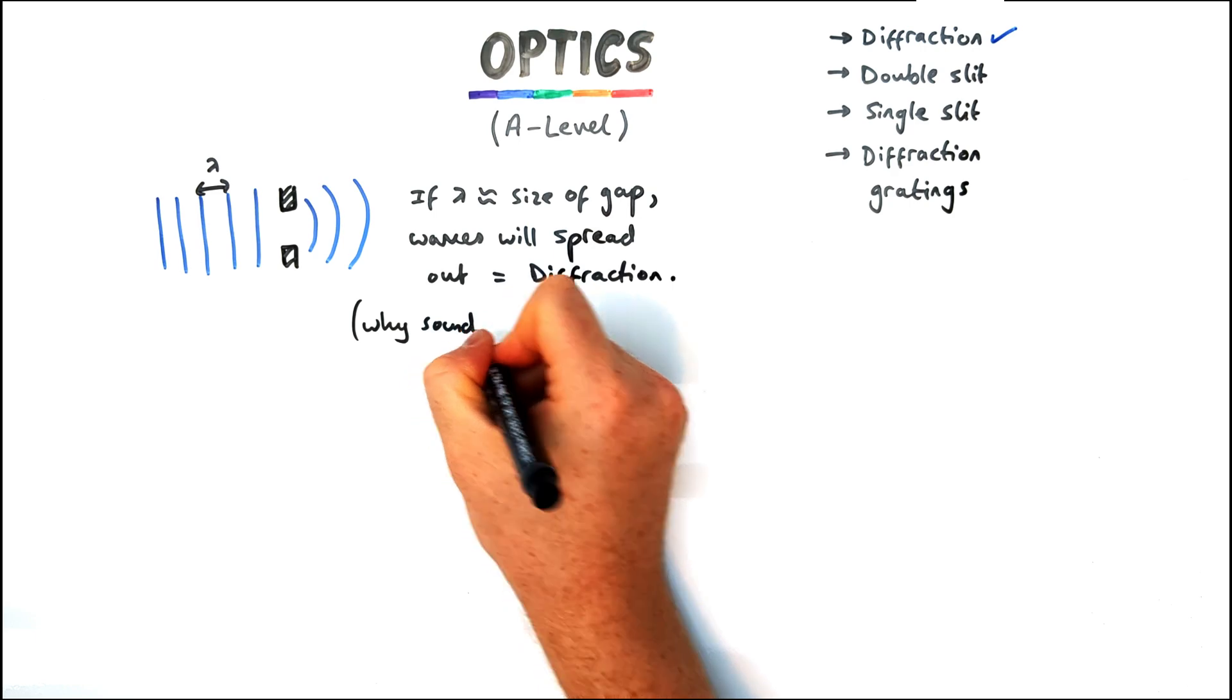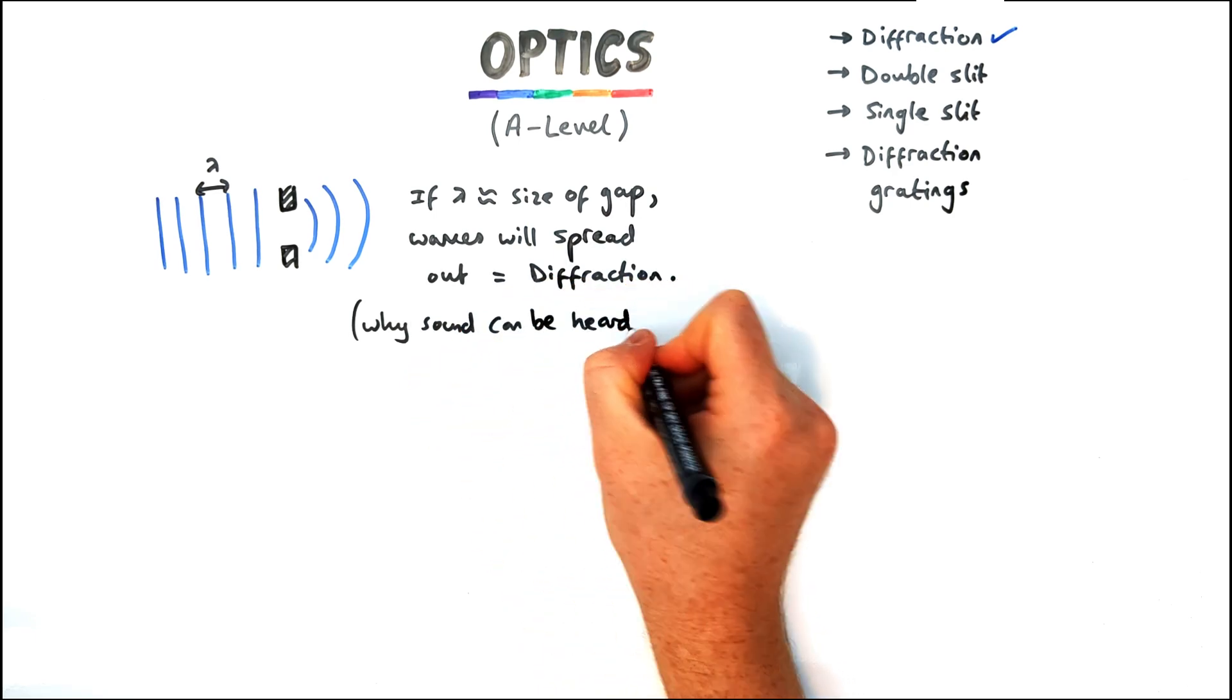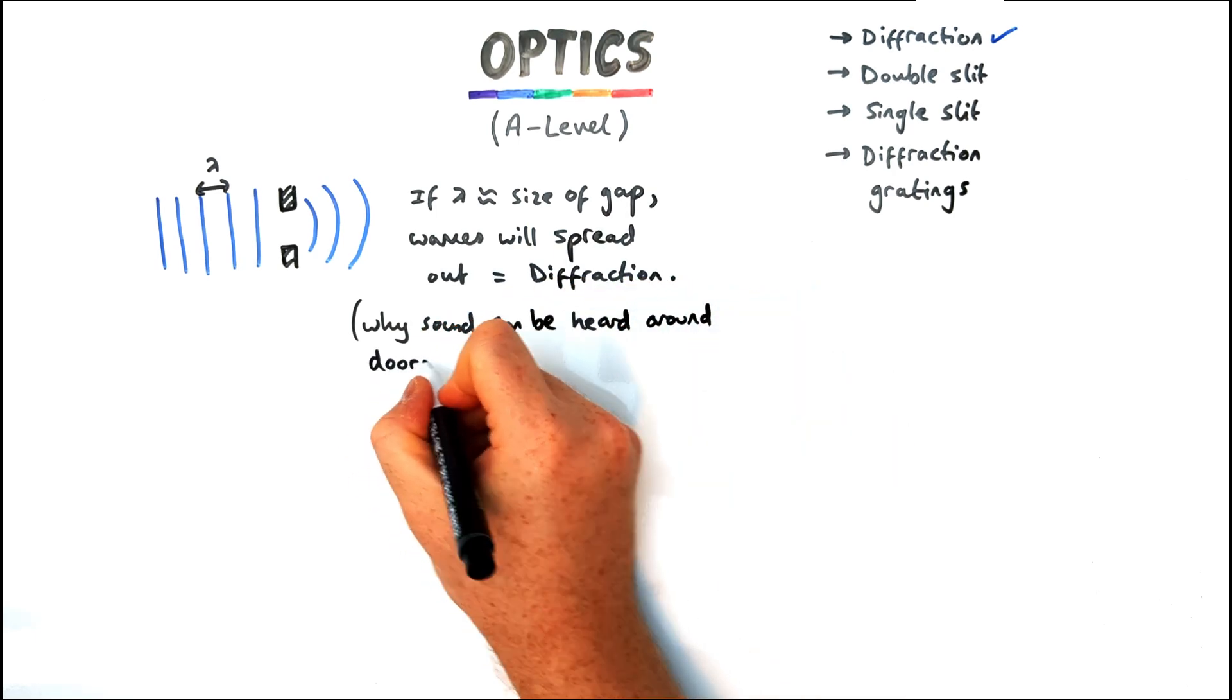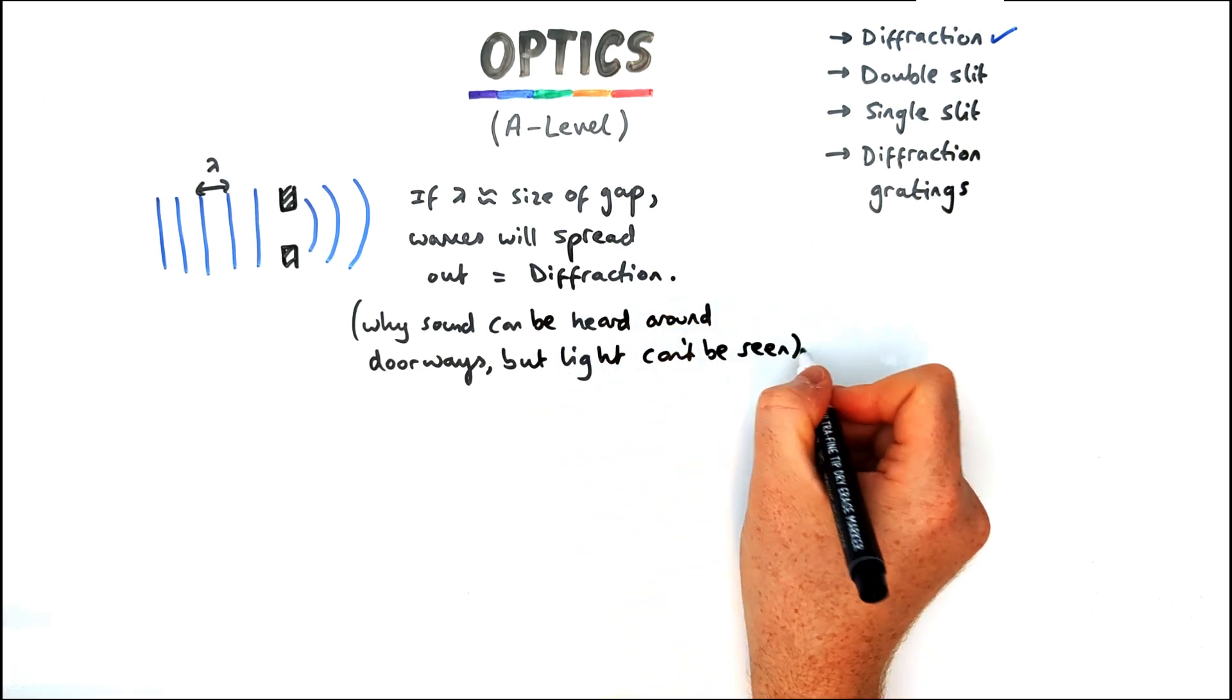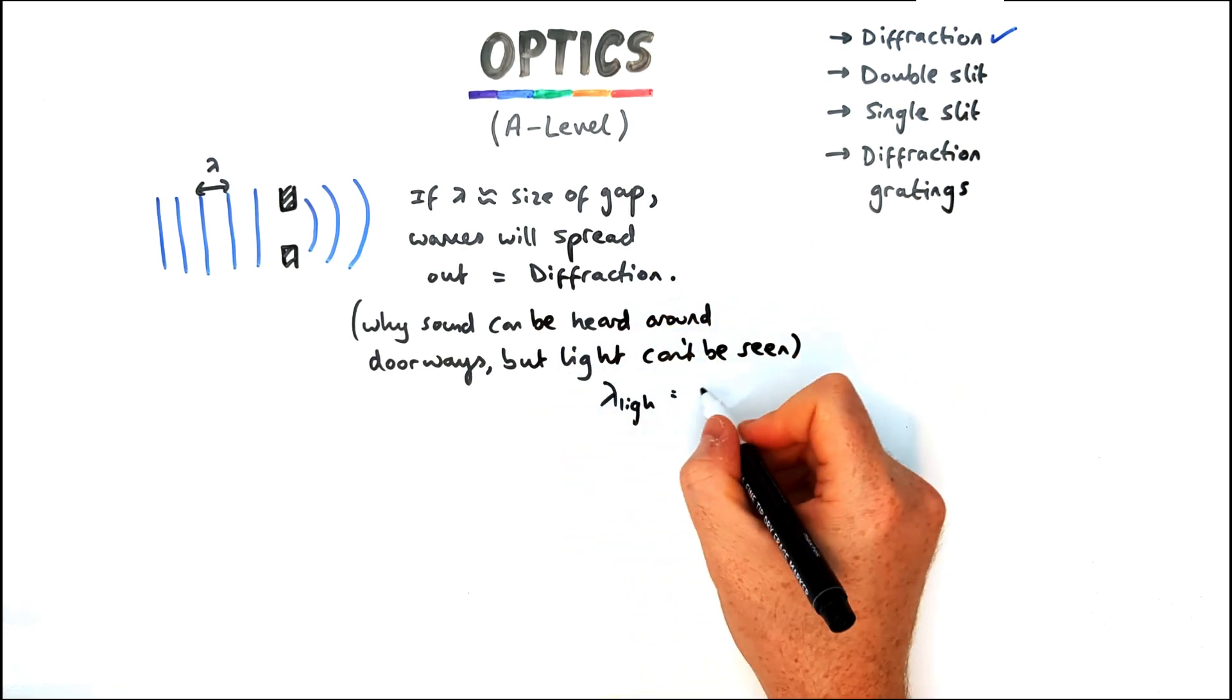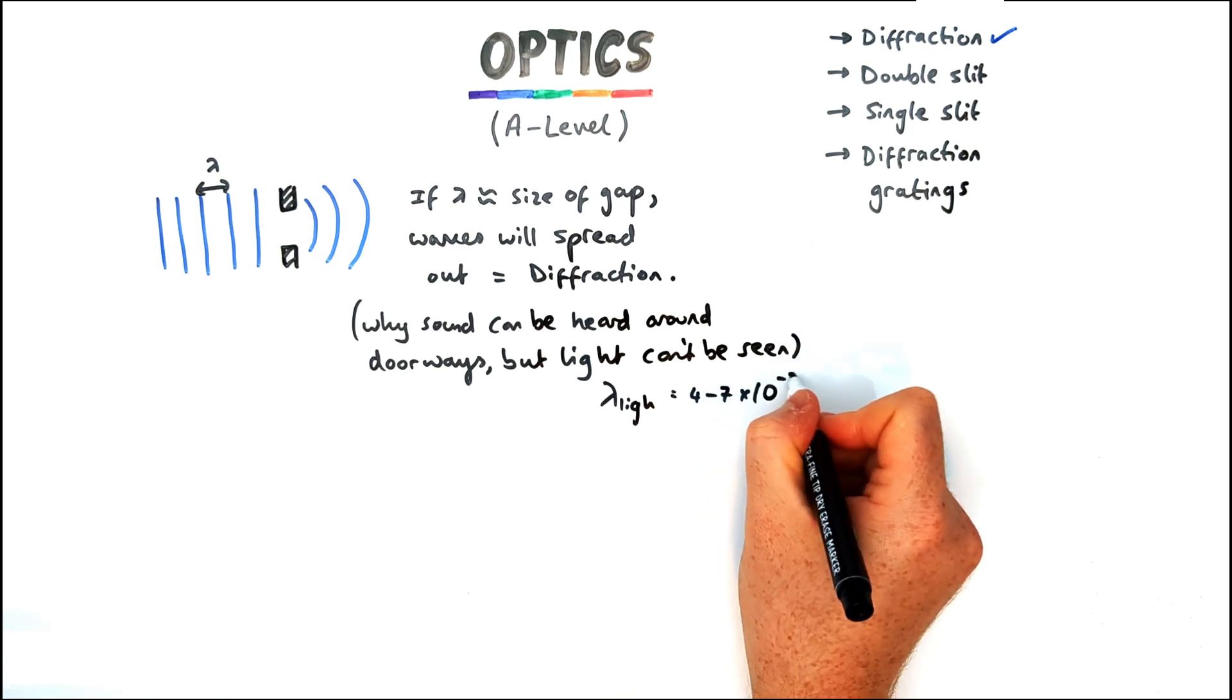And this is really useful because it is demonstrated by light traveling through very small gaps. And it also helps explain why sound can be heard around a corner or through a door where light can't, because the wavelength of sound is much bigger than the wavelength of light.